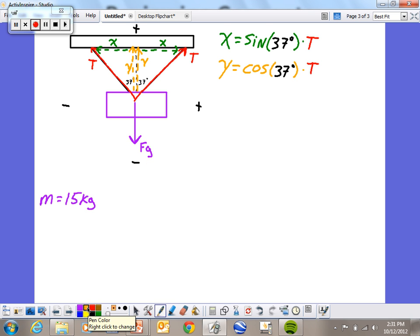So I'm going to do my up stuff minus my down stuff. So I've got one Y upward, and I've got another Y upward. Most common mistake on these is people forget there are two of them. There are two tensions, they both pull up, so there are two Ys.